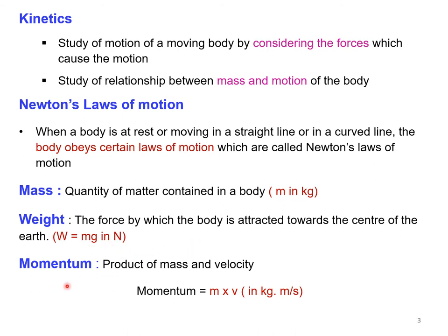Another definition is momentum. It is the product of mass and velocity, written as m times v. The unit for mass is kilogram and the unit for velocity is meter per second; therefore, the unit for momentum is kg·m/s.